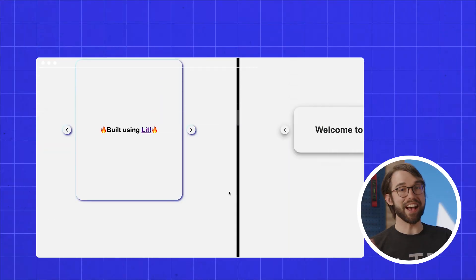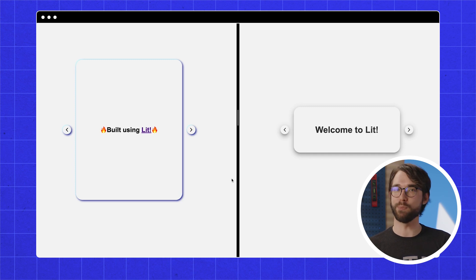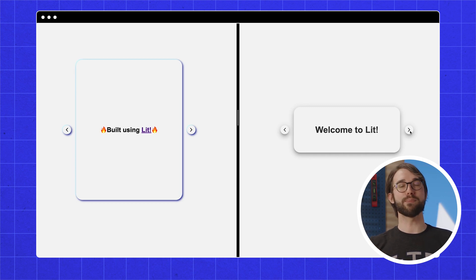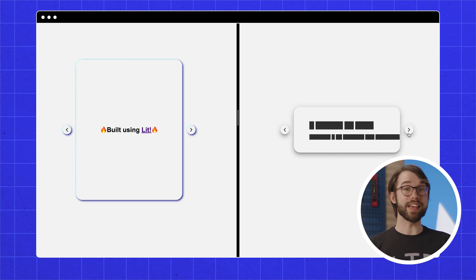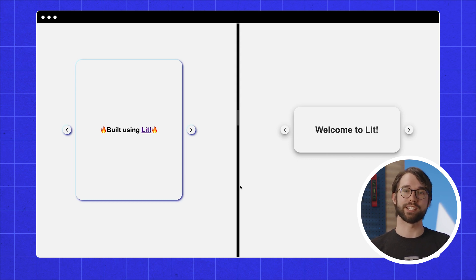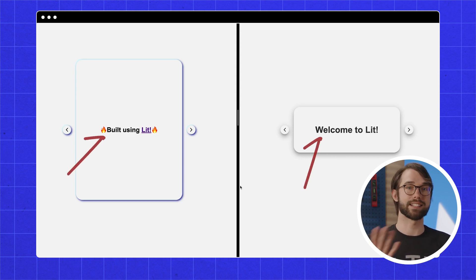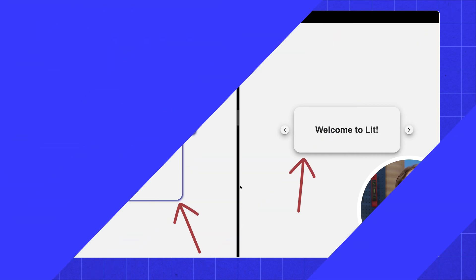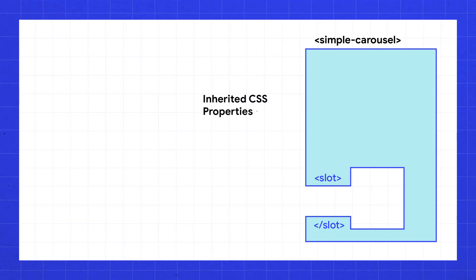Starting with the simplest design, we need to allow our simple carousel customers to customize the carousel so it looks like this, and when they press the button, it should become orange. Notice that all of these customizations can be made by changing simple CSS properties: text color, background color, and box shadow. But how do we let users apply these changes to elements within our carousel's shadow root? In the case of text color, it turns out to be easy, because certain properties like colors and font settings automatically inherit through the shadow root boundary.